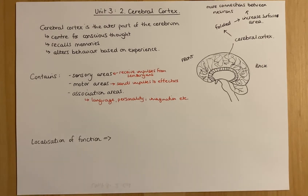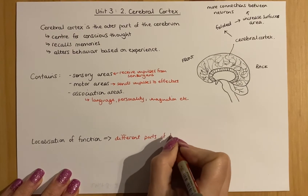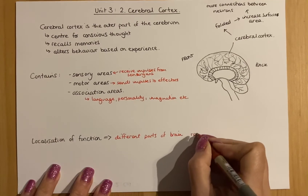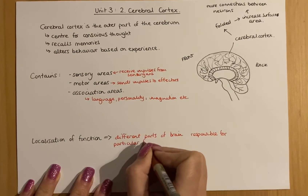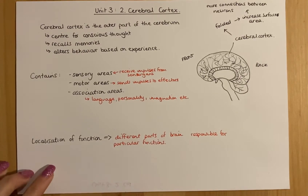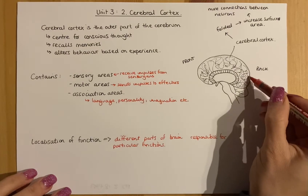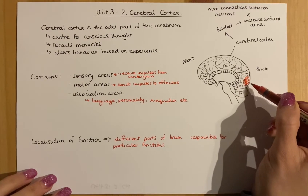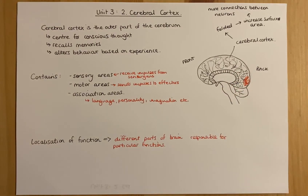That is what's called localization of function. Localization of function basically means that different parts of your cerebral cortex and brain will be involved in controlling or being responsible for different functions — responsible for particular functions. If you think about the term localized, like localized pain, it means in a very particular area. So for example, the occipital region at the back of your brain is responsible for your eyes.